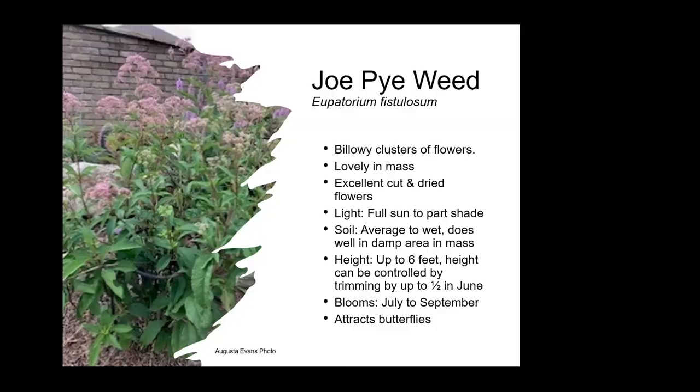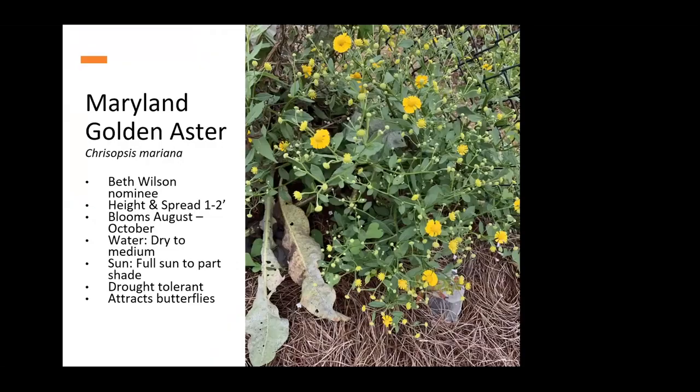Maryland golden aster — a Beth Wilson nominee from the Kentucky Native Plant Society Facebook page — grows one to two feet tall, blooms August through October, takes dry to medium moisture in the soil, full sun to part shade, and attracts butterflies.